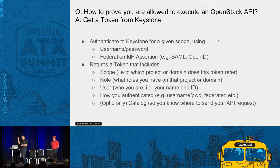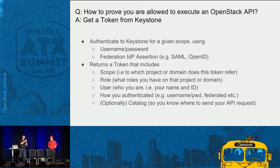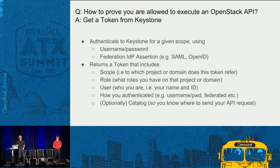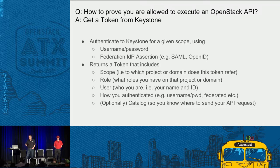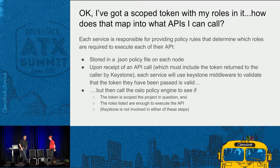That token is going to include: for which container, typically your project, did you actually authenticate to; what roles are assigned; who you are; and sometimes how you authenticated — which is useful to know. And optionally a catalog, though that's kind of beside the point for this discussion. Once you've got that token, you're going to hand it off to an API call, and hopefully magic will happen.